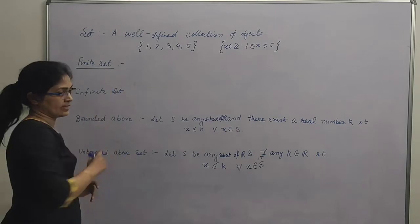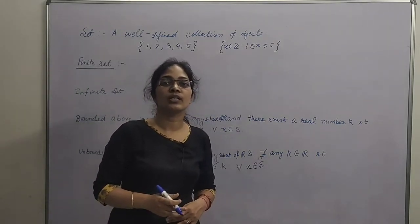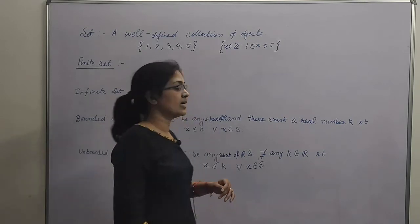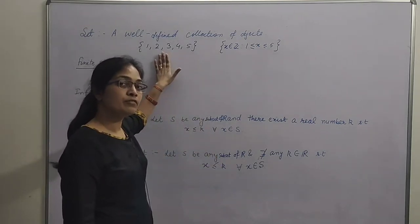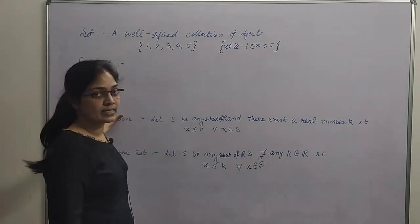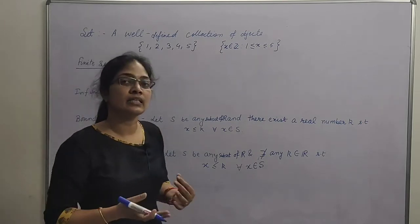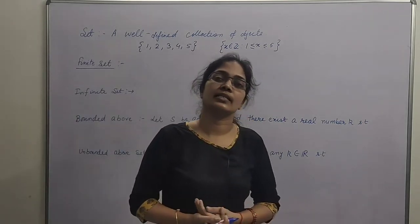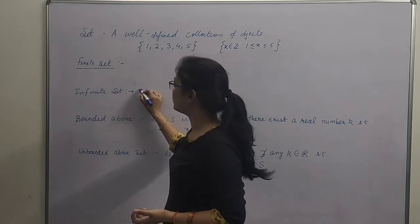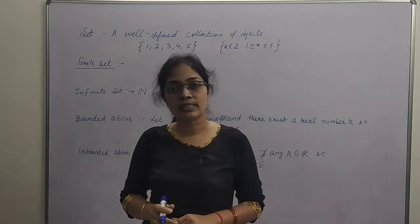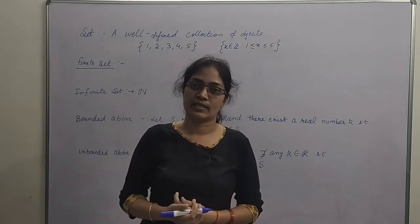Now, next is: what is a finite set? Agar kisi set mein finite number of elements ho, to us set ko hum kya kehte hain? Finite set. Like, in this set, how many elements are there? Five. So it is a finite set. Now next, what is an infinite set? Agar kisi set mein number of elements finite nahi hai, then that set is said to be an infinite set. For example, set of natural numbers — can you count the number of elements in that set? No. So it is an infinite set.